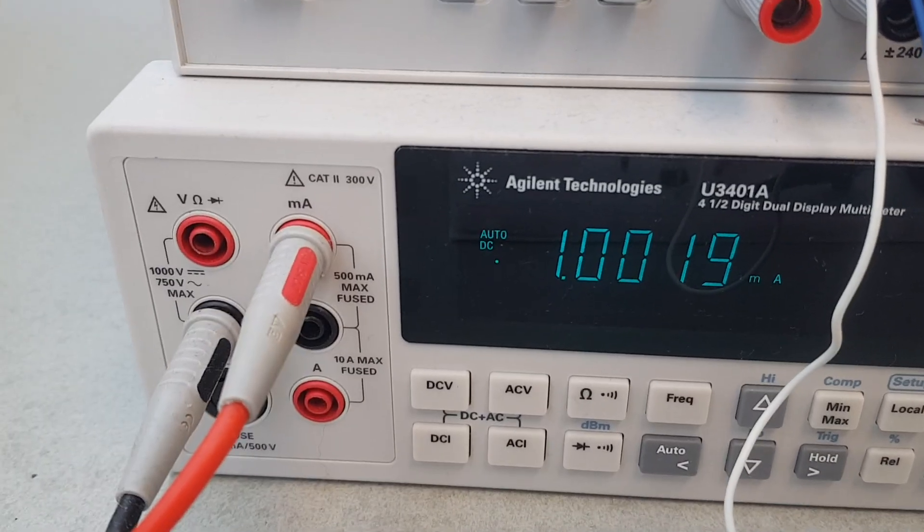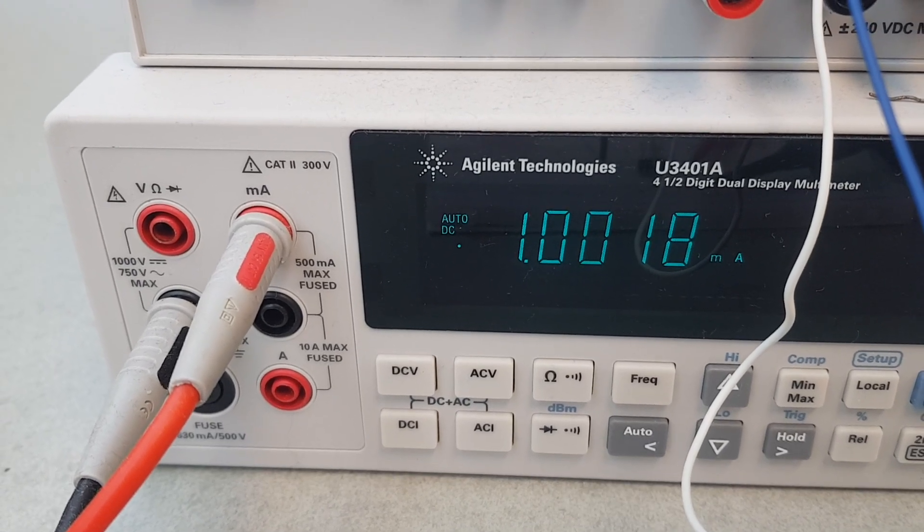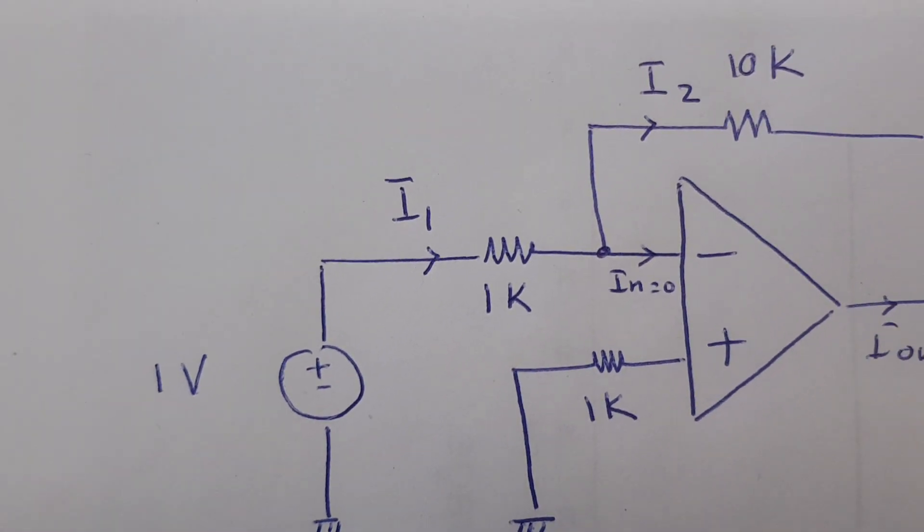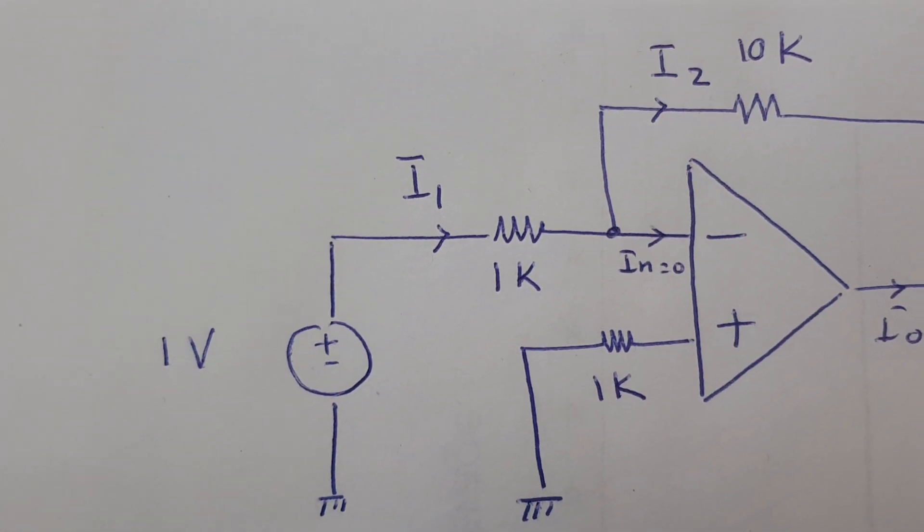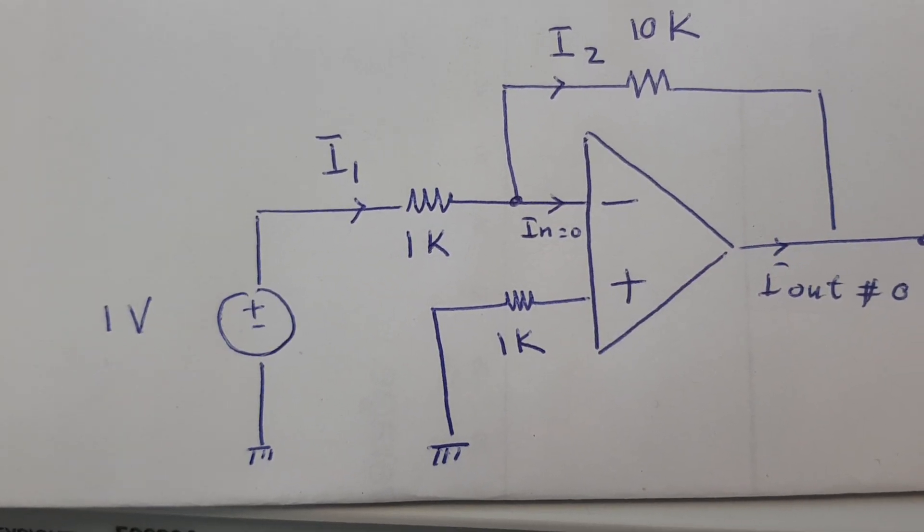Now let's measure I2 and see its value. This is the value of my I2. My I2 is equal to around 1 milliamp. So there is a difference between I1 and I2 equal to around 0.1 milliamp, and that is the current that is going into the op-amp.